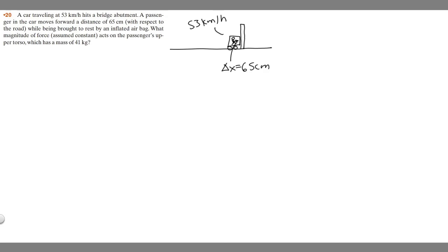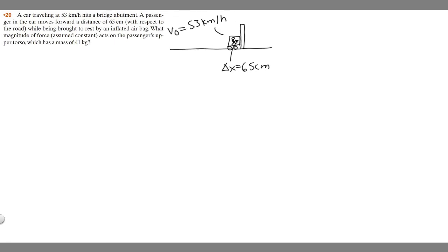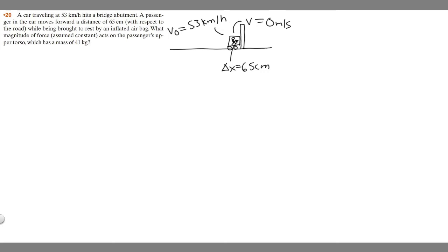Since it's coming to a stop — it's being brought to rest — the final velocity is zero. This right here is our initial velocity, because this is what it's going at before it happens. And then after, v, which is the final velocity, is going to be zero meters per second, because at this point it's not moving anymore. So that's just going to represent what's going on here. Let's go ahead and write down the givens.